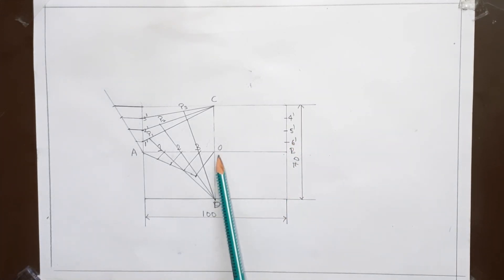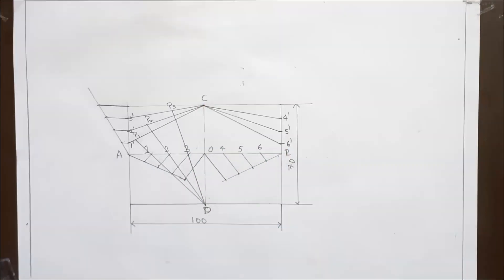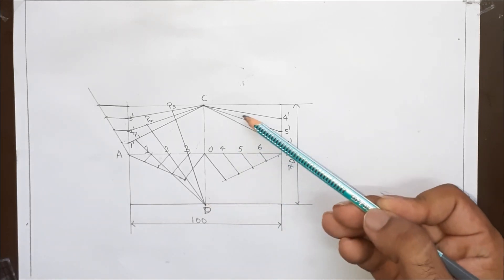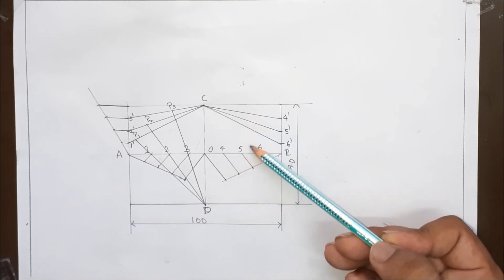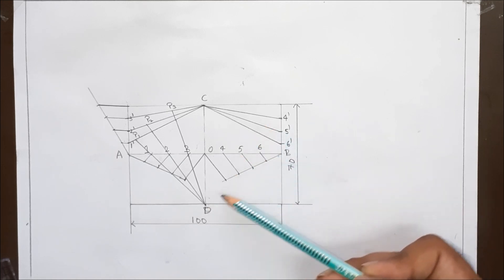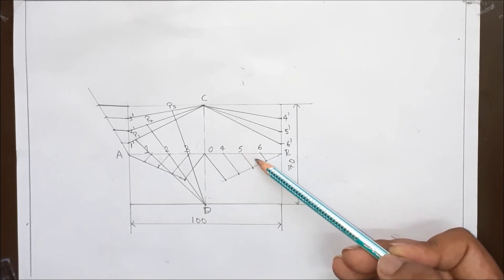Now again we will divide this OB into 4 equal parts, same as we have did in the left side. Now we will draw the lines C4 dash, C5 dash and C6 dash. Now we will join the points D and 4 dash passing through the point 4 and similarly D5 dash and D6 dash passing through the points 5 and 6.